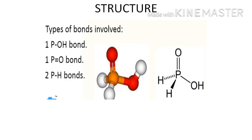The structure of hypophosphorus acid contains one P–O–H bond, one P=O bond, and two P–H bonds. Only the hydrogen attached to oxygen can ionize, so it is a monobasic acid.